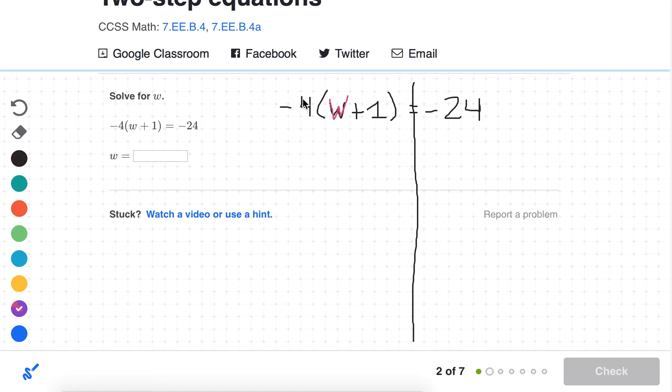So working backwards, this multiplying by negative 4 is the outermost layer. As a first step, we're going to divide by negative 4 to get rid of that. Negative 4 divided by negative 4 is 1, so that cancels out, and we're left with just w plus 1. That's going to equal negative 24 divided by negative 4, which is positive 6, because a negative divided by a negative is a positive.